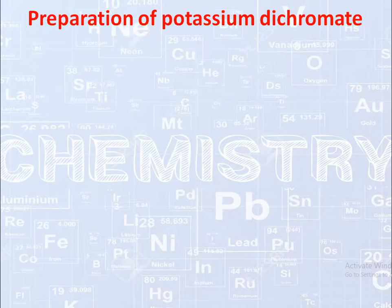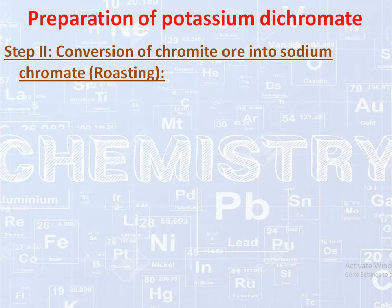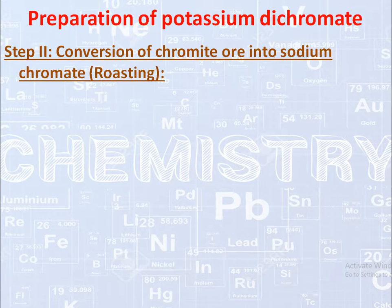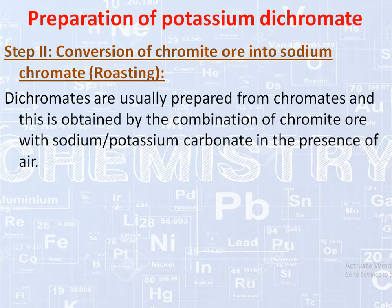In Step 2, the concentrated chromite ore is converted into sodium chromate — a process called roasting, which means heating the ore in air. Dichromates are generally prepared from chromates, so we first convert chromite ore into sodium chromate. This is obtained by combining chromite ore with sodium carbonate in the presence of air.